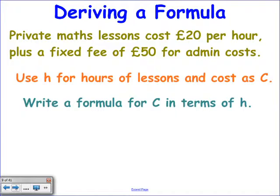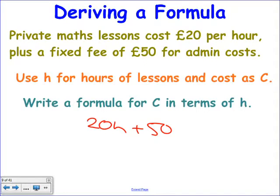Here's another one. Private maths lessons cost £20 an hour plus a fixed fee of £50 for admin. Use H for hours and C for cost. James went straight in with 20H — because it's £20 an hour, for every hour you multiply by 20. Then because it's a one-off charge of £50, whether you do zero hours or 100 hours you still pay the admin charge. So C equals 20H plus 50. Does that look familiar? That's the gradient — 20 — and the y-intercept — 50.